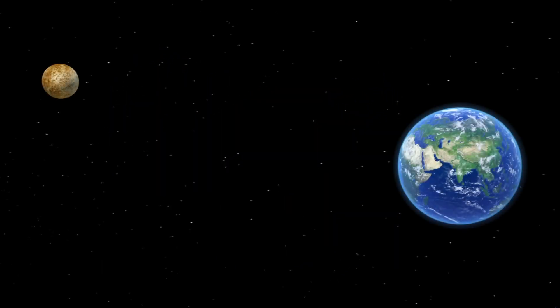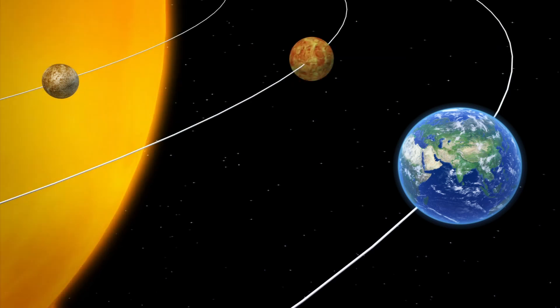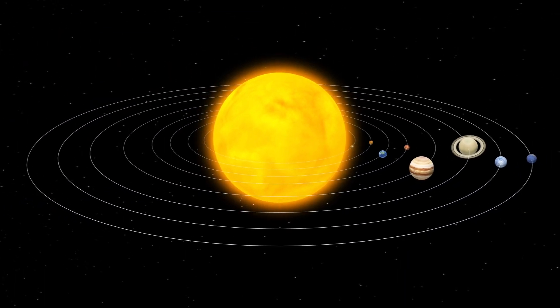This is because both Mercury and Earth are orbiting the solar system at different speeds, creating an illusion that the planet is moving backwards.